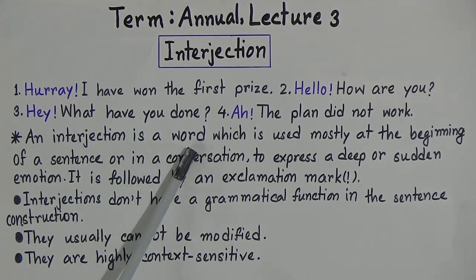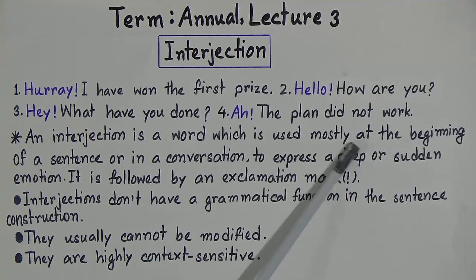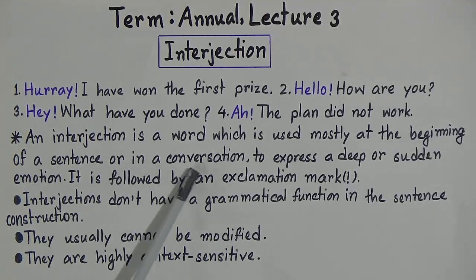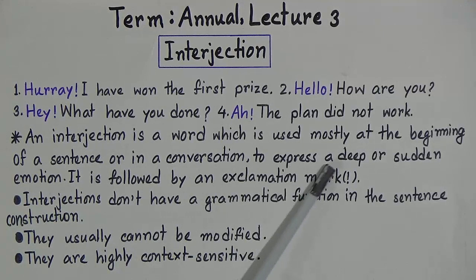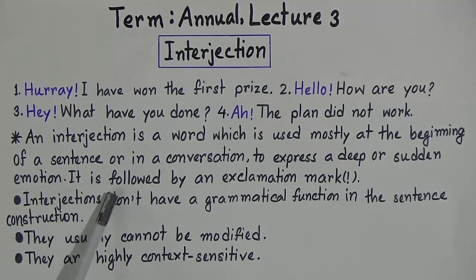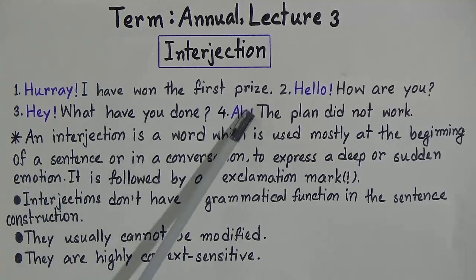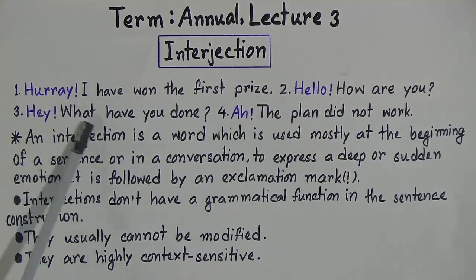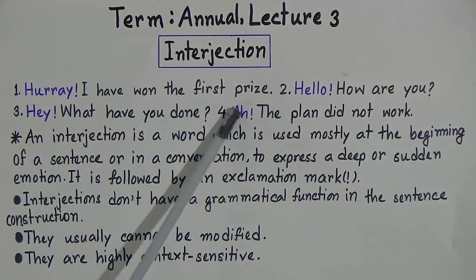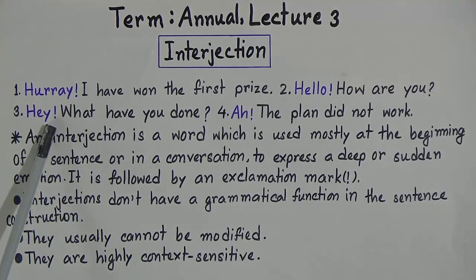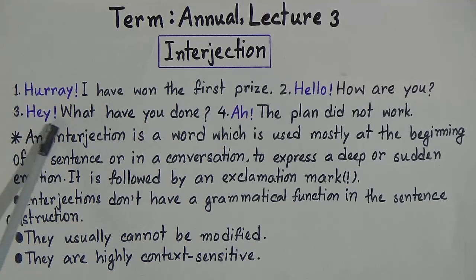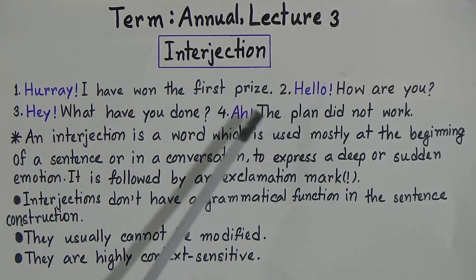An interjection is a word which is used mostly at the beginning of a sentence or in a conversation to express a deep or sudden emotion. It is followed by an exclamation mark. Now look — there is an exclamation mark. So interjections are followed by an exclamation mark and are used at the beginning of sentences.